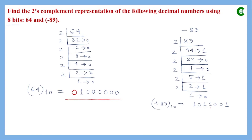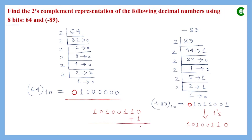For minus 89, the binary of plus 89 is 1 0 1 1 0 0 1. Written as 8 bits with MSB = 0 for positive 89. We then take the 1's complement (0s become 1s, 1s become 0s), then add 1 to get the 2's complement. After binary addition — adding 1 to the 1's complement — we obtain the 2's complement representation of minus 89, which has MSB = 1 indicating a negative number.